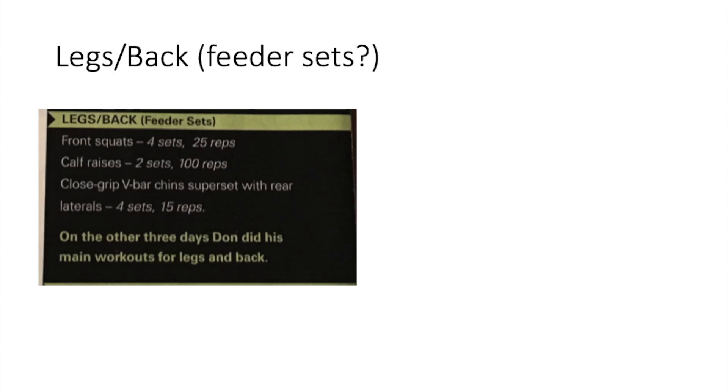Let's begin the legs and back workout. He begins his workout with front squats, does four sets of 25 reps, moves on to calf raises on the Smith machine, I know this for a fact because I read an article about it, two sets of 100 reps, then moves on to close grip V-bar chins superset with rear laterals, does four sets of 15 reps.